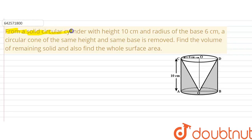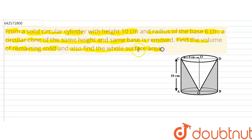Hello students. The question given here is: from a solid circular cylinder with height 10 centimeters and radius of the base 6 centimeters, a circular cone of the same height and same base is removed. Find the volume of the remaining solid and also find the whole surface area. This is the diagram — the cylindrical part with the conical part of the same radius and same height removed.